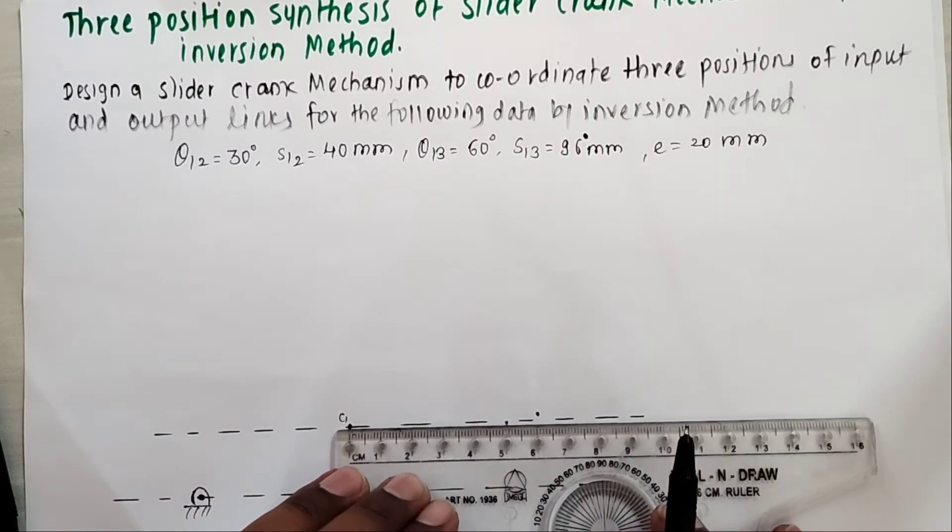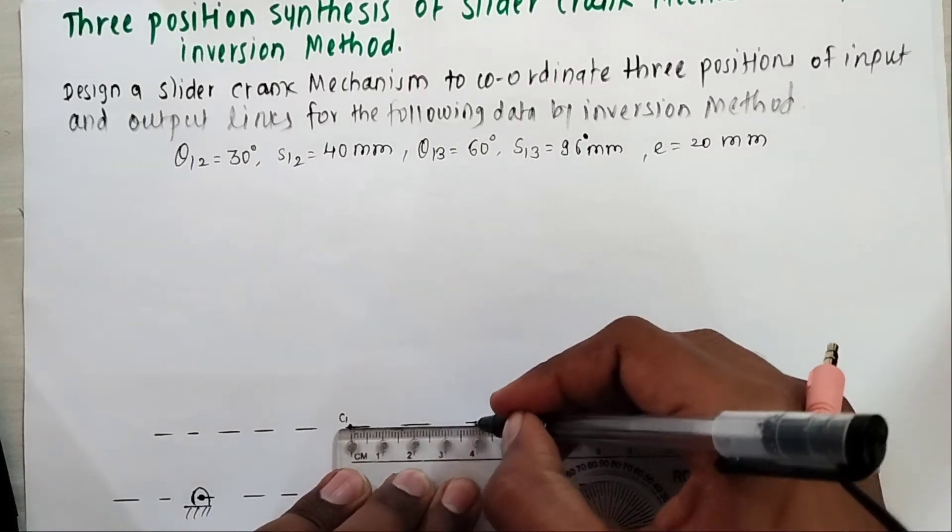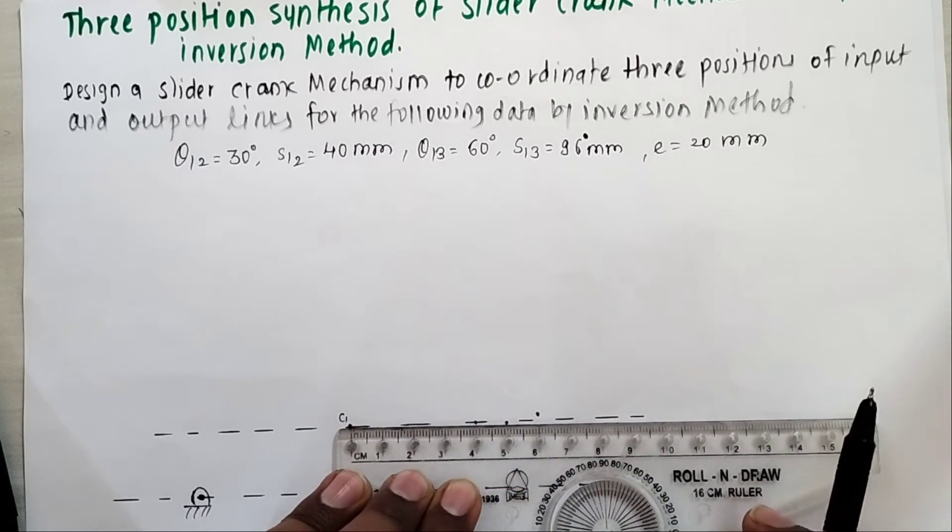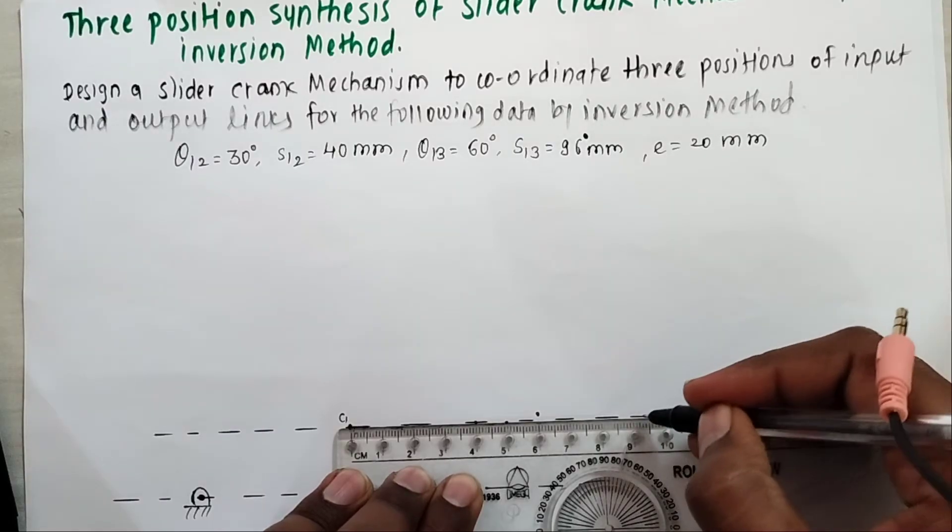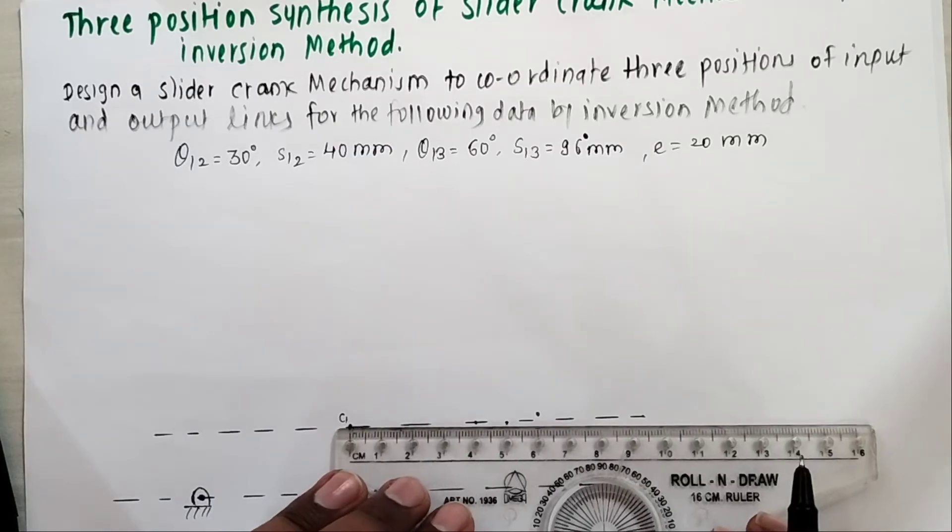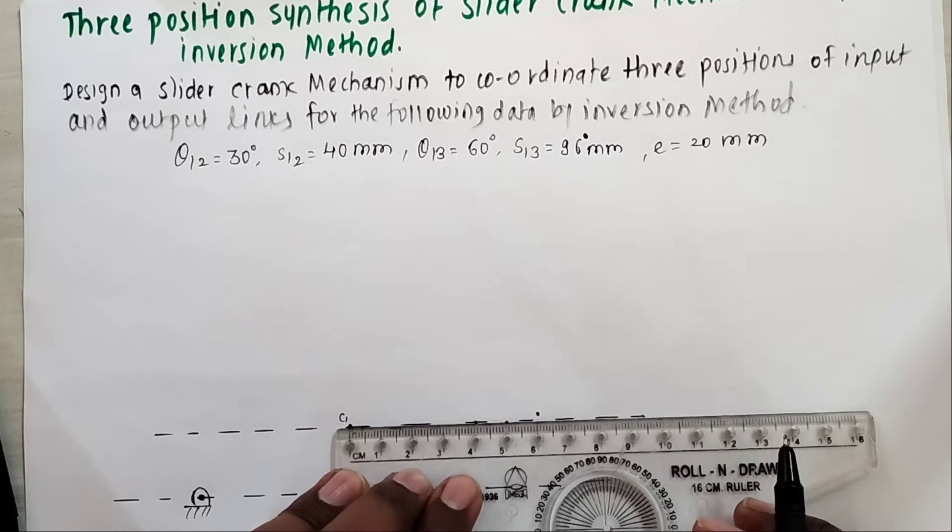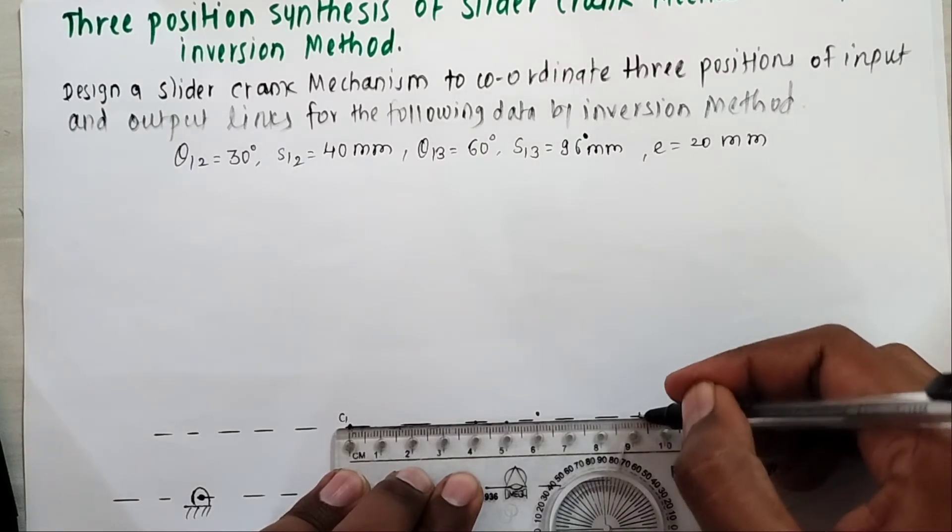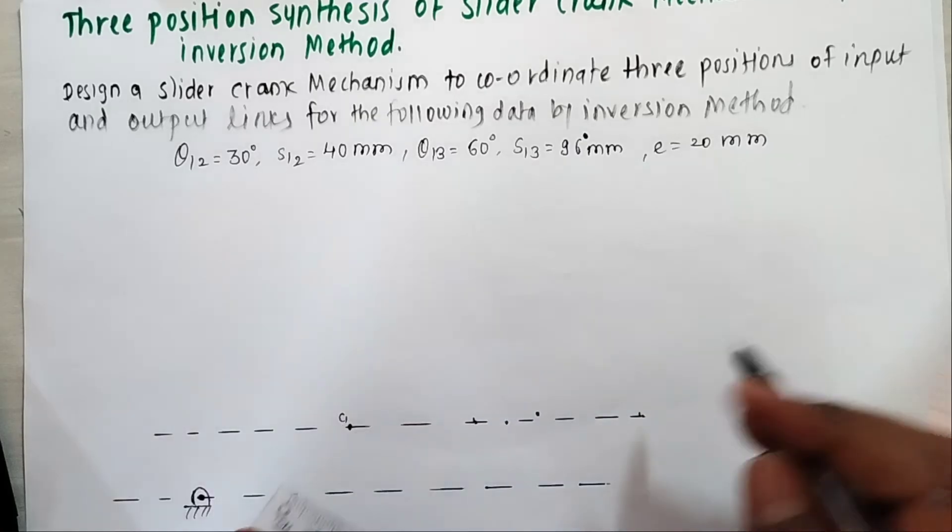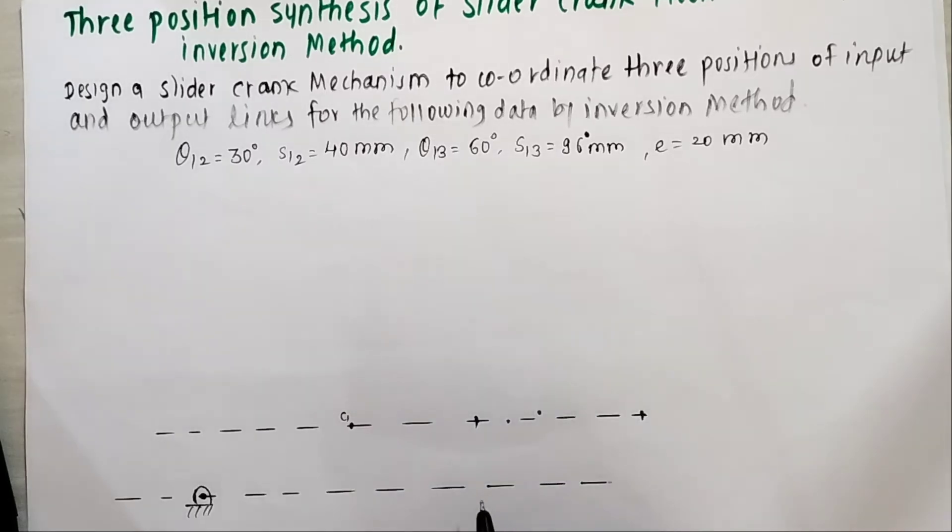As S12 is 40 mm I will mark first point C2 at 40 mm. This is position of C2. And C3 is at S13 that is 96 mm. These are C2 and this is C3.